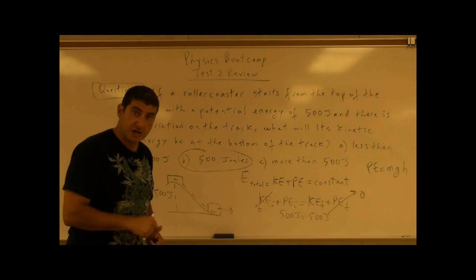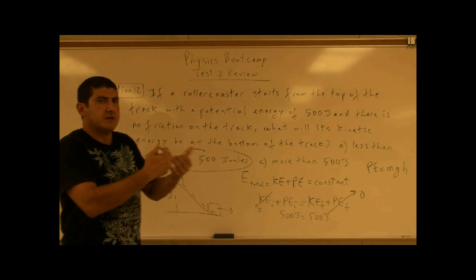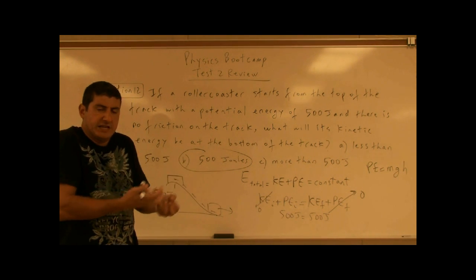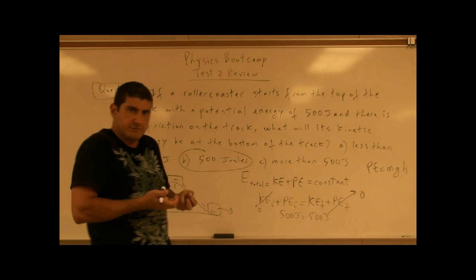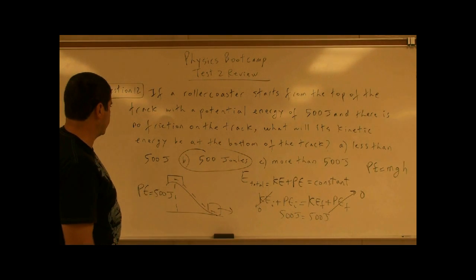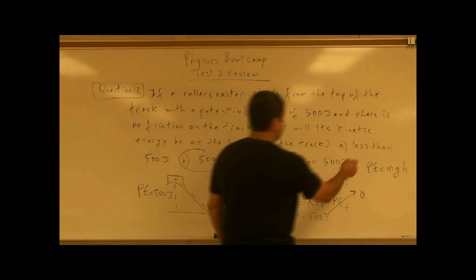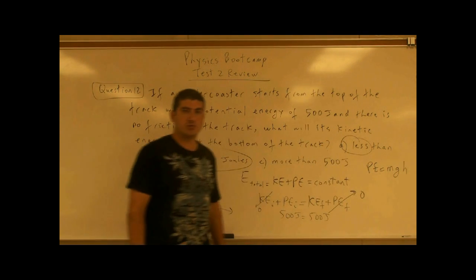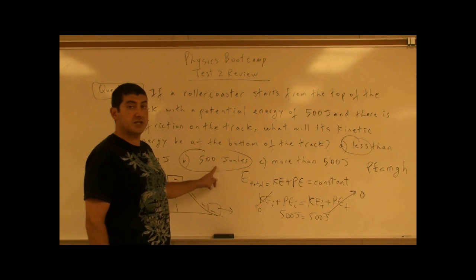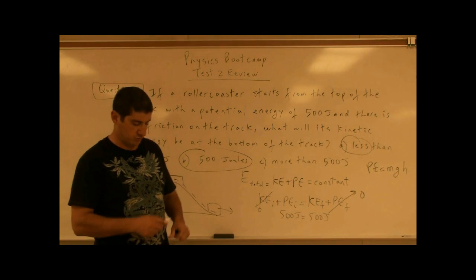What if there was friction on the tracks? If there was friction, it would do negative work — it would eat away from the energy of the system. So the final kinetic energy would be less than 500 joules if there was friction. But since there is no friction, the answer is B. Thank you.